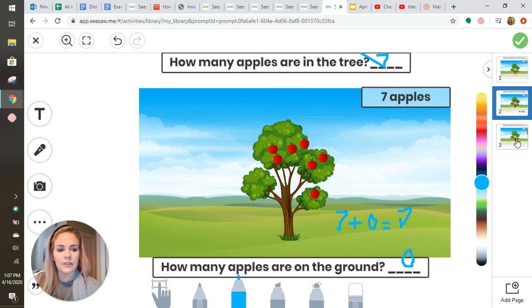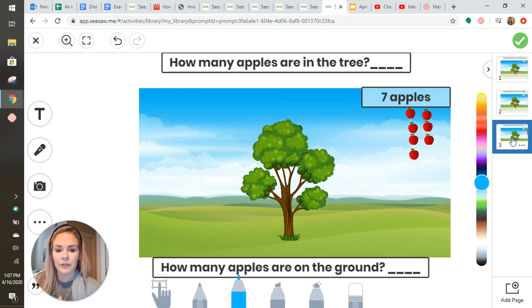Then click on the three in the corner to think of one more way to separate the seven apples between the tree and ground. When you're all done, click the green check to submit. Bye friends!